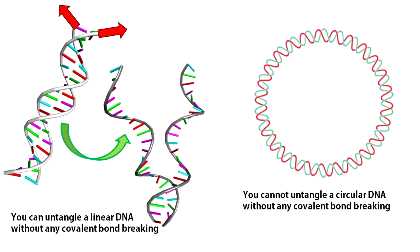But if you consider a circular DNA, the scenario is entirely different. Without breaking the phosphodiester bonds, you simply cannot completely separate the two strands. Remember, for all natural DNAs this scenario is true. The rotation of their free ends is either restricted or completely forbidden. This means untangling the two strands of all biological DNA is topologically impossible.